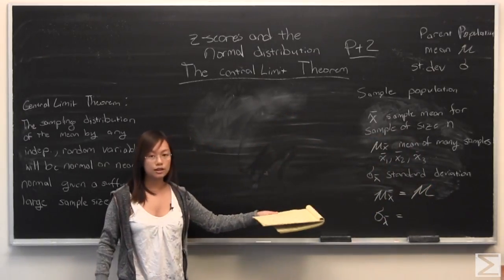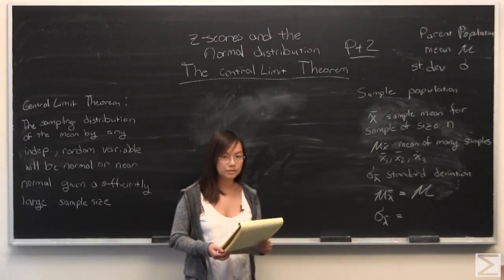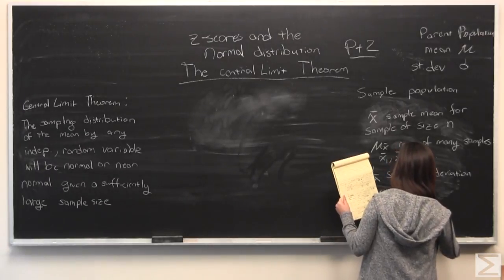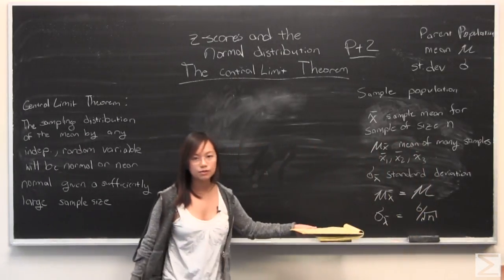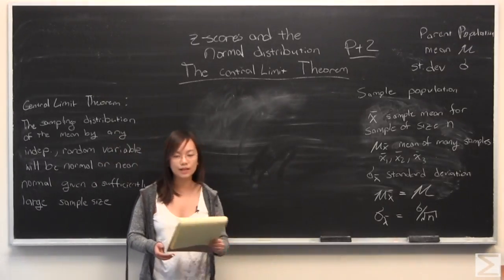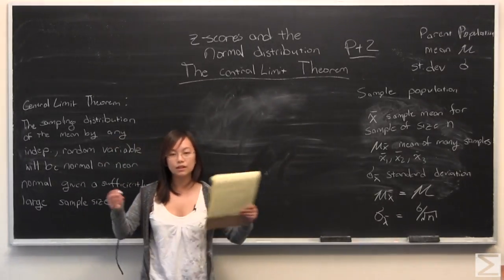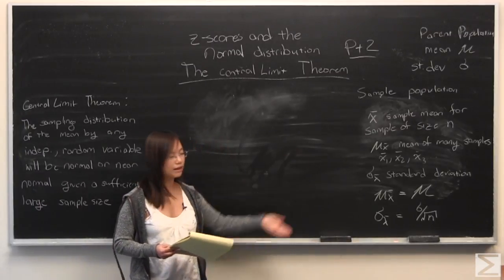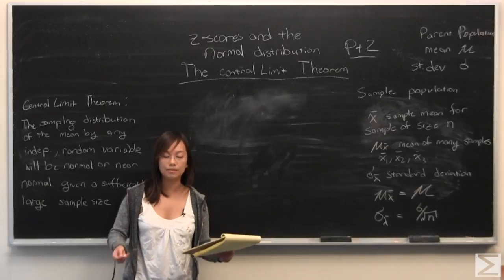And you will find that the standard deviation, sigma sub x bar, that's going to be sigma divided by the square root of n, where n is the size of your sample that you took from the population. So that's kind of what we have. And from that, we can work with the z-scores that we talked about last time.